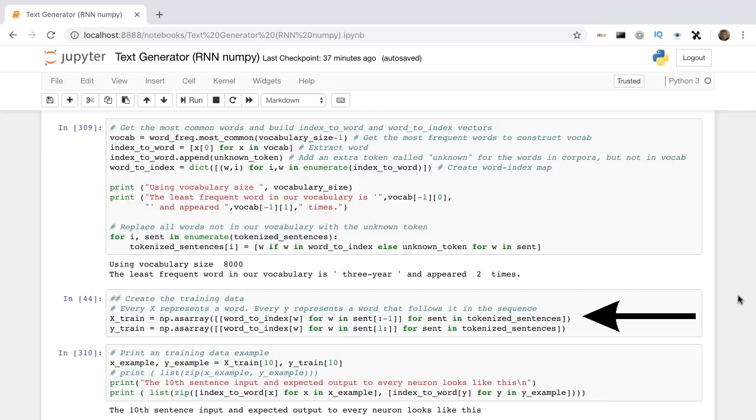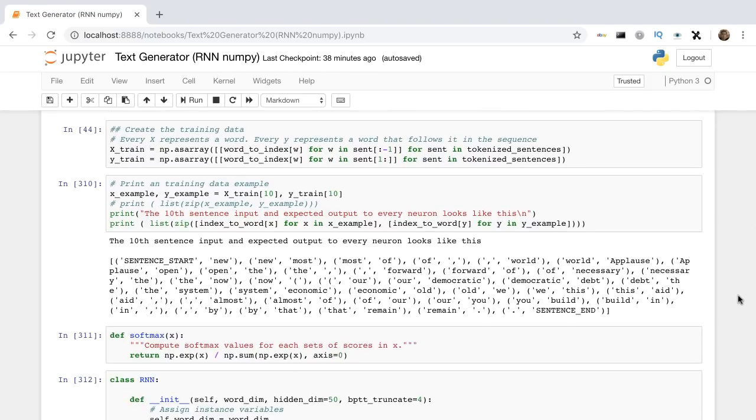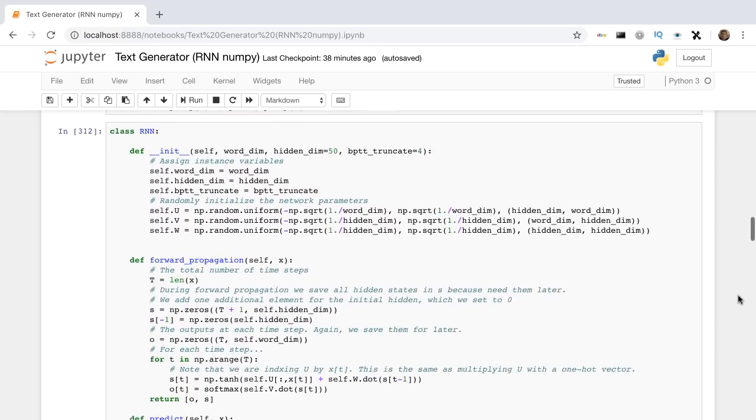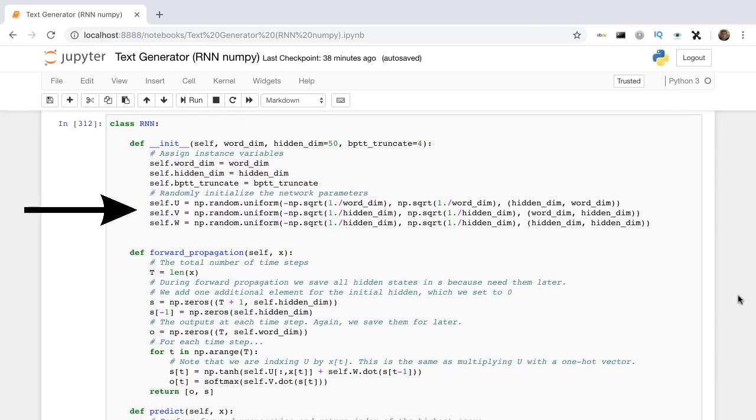Input is a word, the output is the predicted next word. Pythonically, it's just zipping a list with a version of itself that's one step ahead. Next, let's get into our RNN class. The constructor makes initializations of our matrix parameters, u, v, and w.